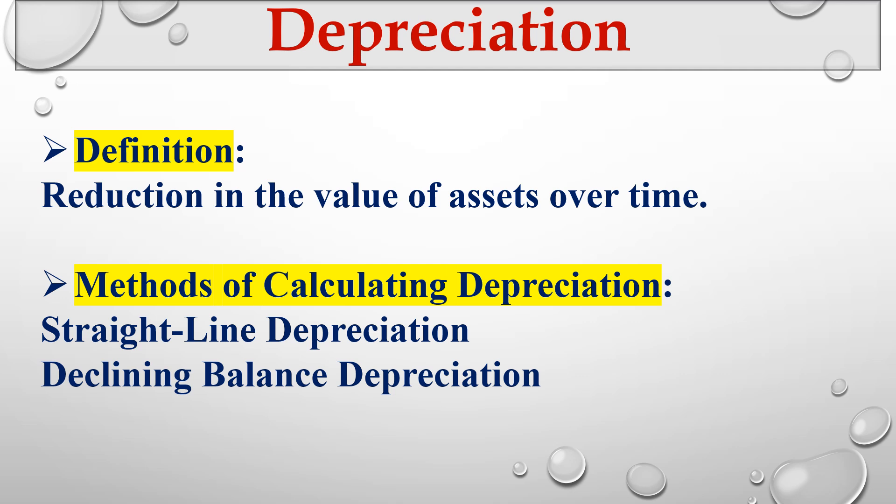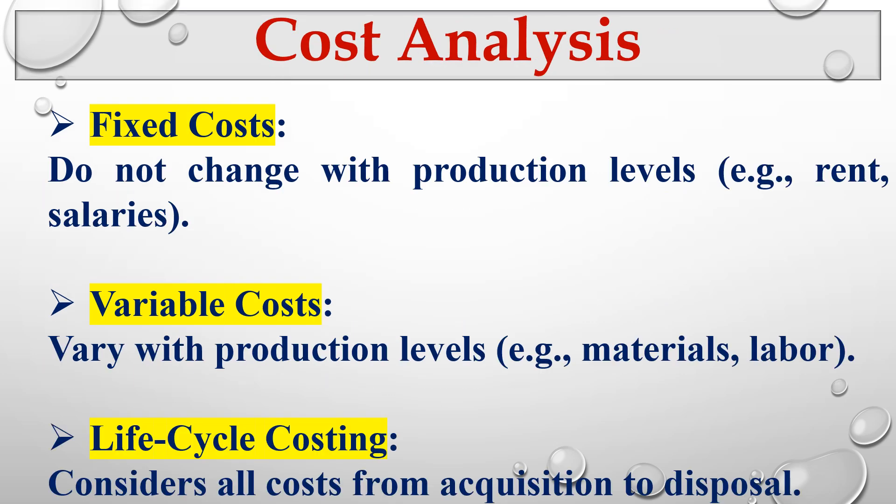The next principle is cost analysis. There are three types: fixed costs, which do not change with production levels — such as rent and salaries; variable costs, which vary with production levels — such as material and labor costs that increase as production increases; and life cycle costing, which considers all costs from acquisition to disposal.